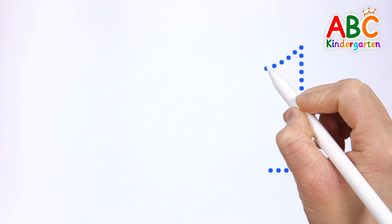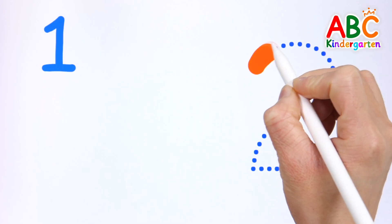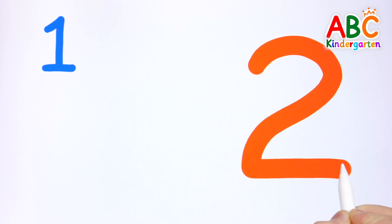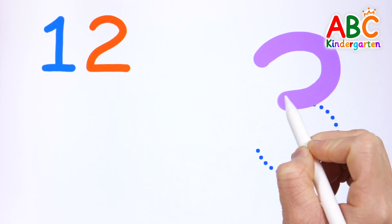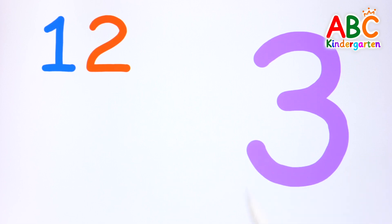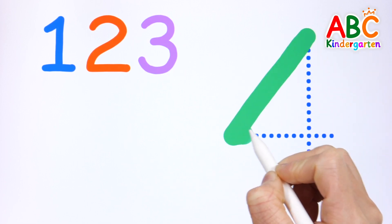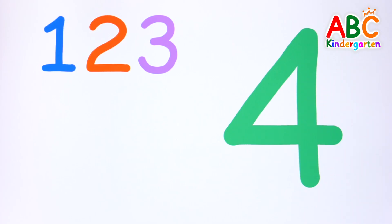Let's write and read the numbers one by one. 1, 2, 3. 1, 2, 3. 1, 2, 3.